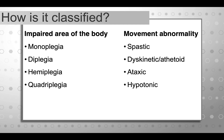By movement abnormality: spastic CP usually involves some sort of injury to the white matter tracts that results in high tone. Dyskinetic or athetoid cerebral palsy usually results from injury to the basal ganglia. Ataxic cerebral palsy usually refers to an injury to the cerebellum. And hypotonic cerebral palsy — low tone, floppy — there's not a specific area of the brain associated with that; it's when a child is just kind of floppy, ragdoll sort of tone. That's a more rare form of CP.